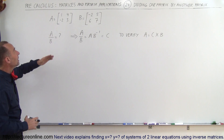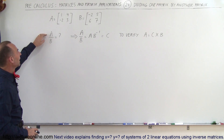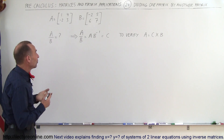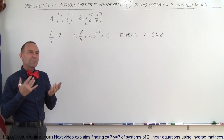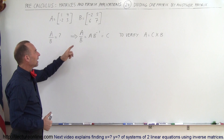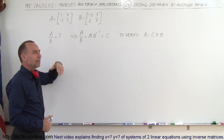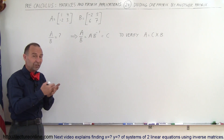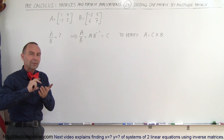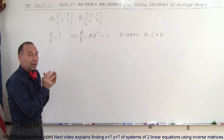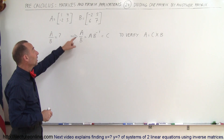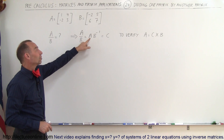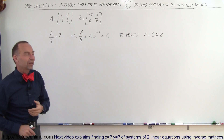So here we have two matrices, A and B, and we're trying to find the quotient A divided by B. If we follow the algebraic methodology, A divided by B should equal A times the inverse of B — just like dividing one fraction by another is the same as multiplying by the inverse of that fraction. So dividing one matrix by another is the same as multiplying by the inverse of the second matrix.